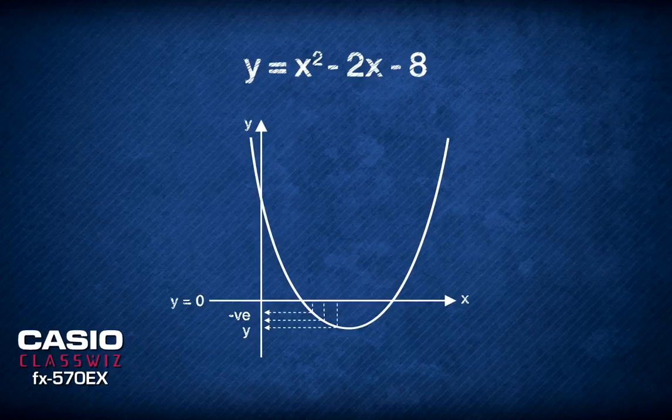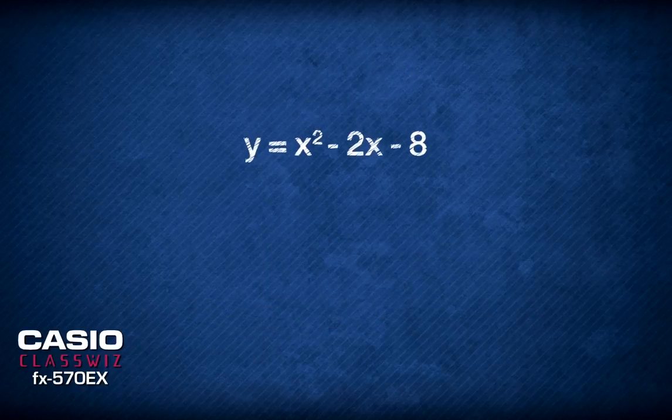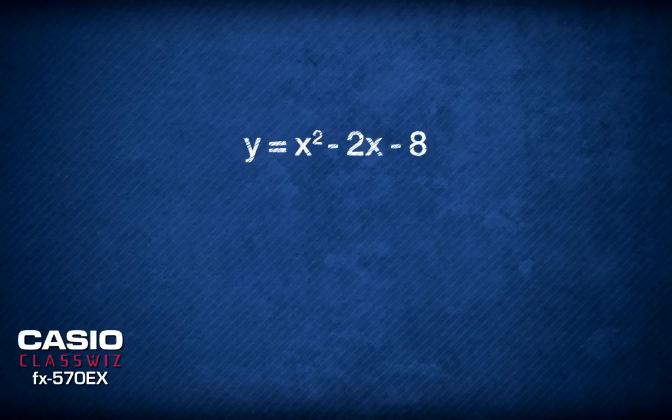To start solving this equation, let's factorize this quadratic function. Factorizing it, we have x minus 4 times x plus 2.